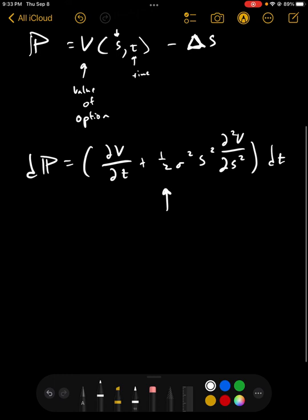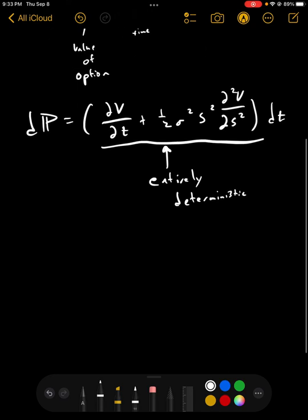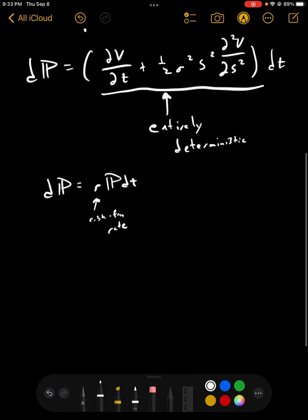Now, the important thing to realize is that this chunk is entirely deterministic. There is no randomness in this. So, since there is no randomness, the change in value of our portfolio has got to be the risk-free rate times P times dt. So this is the risk-free rate. And that's because this is entirely deterministic. There is no risk, therefore, the return has to be the risk-free rate. Make sense?